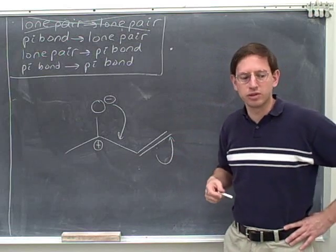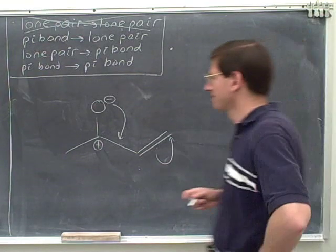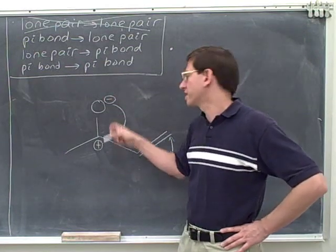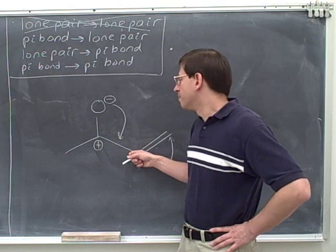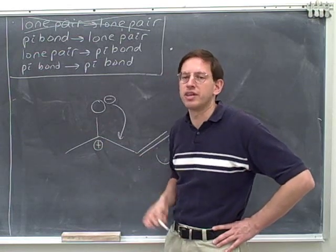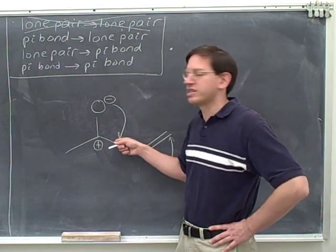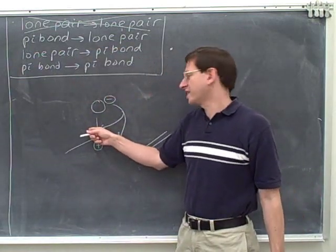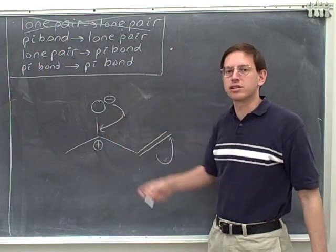Do these arrows satisfy the as close as possible rule? It should be pretty apparent that here we're taking this lone pair and making it into a pi bond that is not as close as possible to the original lone pair — we'd be forming a pi bond down here, but it would be closer to put the pi bond up here, as we saw in the previous example. So this is a good example of an arrow that violates the as close as possible rule. This other arrow is fine and is as close as possible, but the one pointing down is not — it would be better to put the new pi bond over here, closer to the original lone pair.